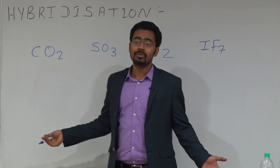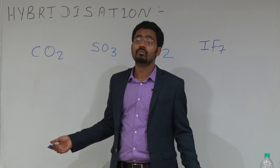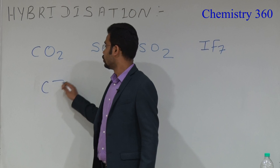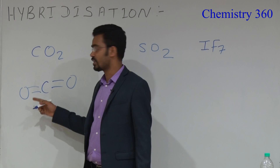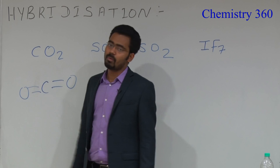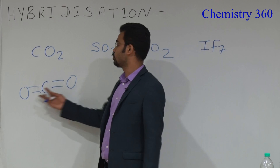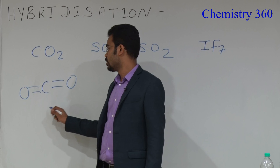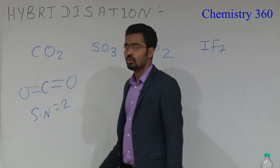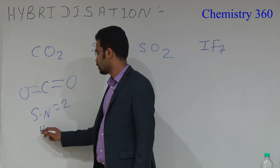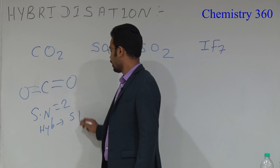Oxygen can form a maximum of 2 bonds, and carbon has 4 valence electrons. So there are 2 super sigma bonds — this multiple bond is considered as one super sigma. That means the steric number is 2, so the hybridization is sp.